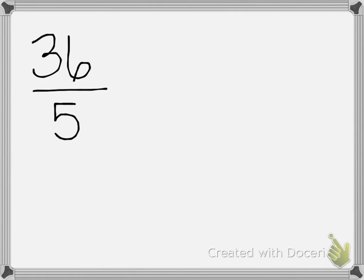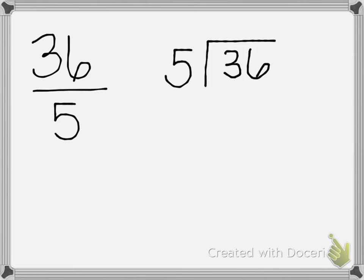Our first step is to divide the numerator by the denominator, so we are going to say how many times can 5 go into 36. Well, 5 cannot go into 3, so we are not going to start there — we are going to start in our ones place. We'll put a 0 above our tens place to say we cannot divide into 3, but we can divide into 36.